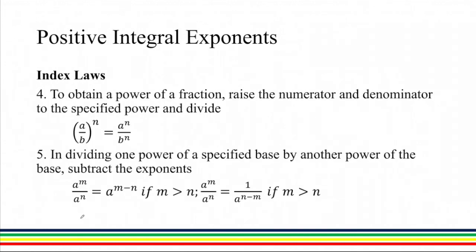Number four, to obtain a power of a fraction, we will raise the numerator and the denominator to the specified power and divide afterwards. This is similar to the product earlier, wherein we somewhat distributed the exponent n to both terms.